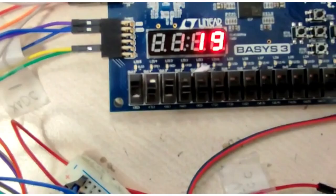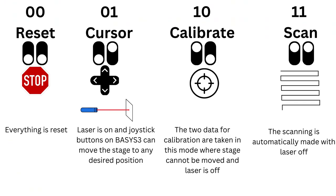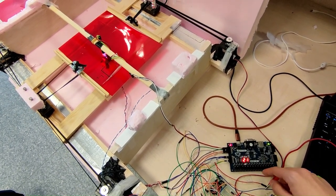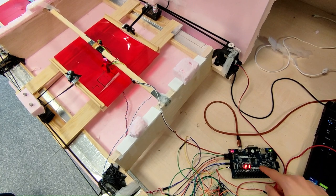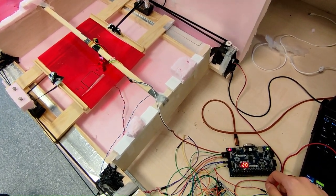Two switches from the Basys III board have been selected for the mode function. For example, 00 stands for reset, where all the counters for our clock dividers stop, the stepper signals sent from the PMOD pins stop so the stage is not moving, the laser is off, and we are not reading any additional data. Then 01 stands for cursor mode, which is a manual mode controlled with the joystick buttons on the Basys III to move the stage to any desired position, which is very useful for the calibration mode.